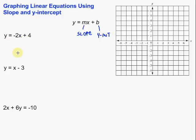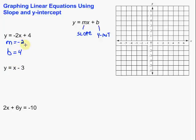As we look at this one, the slope is the coefficient of the x term. In this case, it's negative 2, so m equals negative 2. Secondly, we're looking for that y-intercept, which is the b. The b in this case is 4. So we have our m and our b. Once we have those, we can use them to graph our equation.